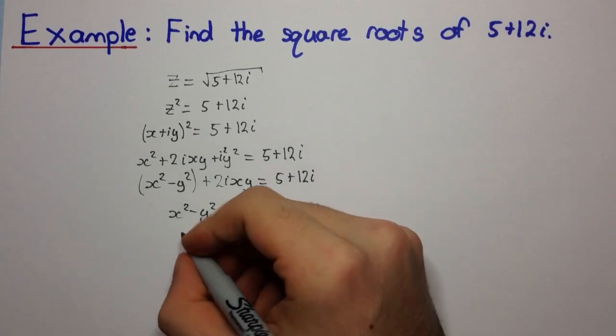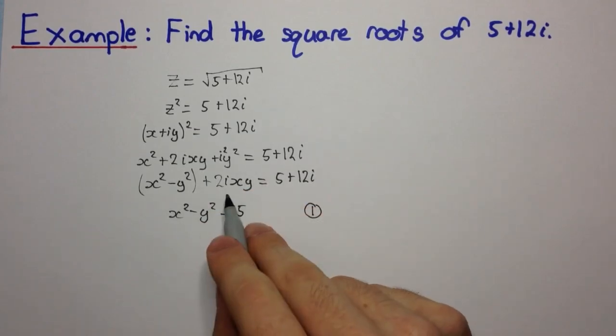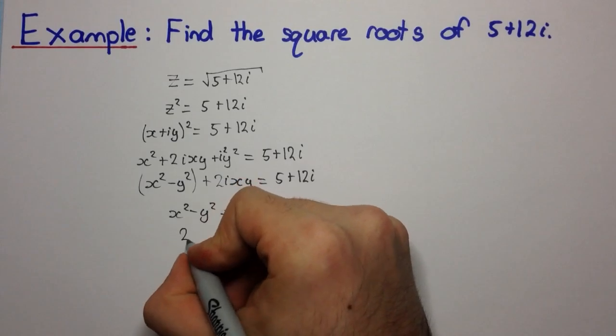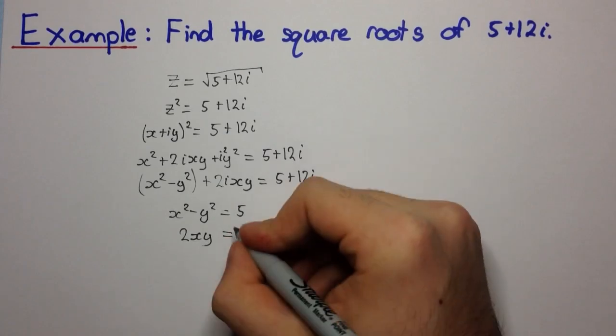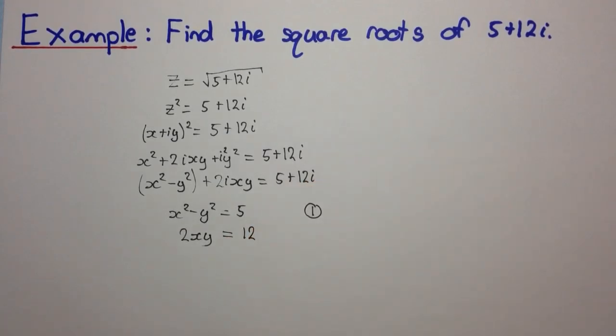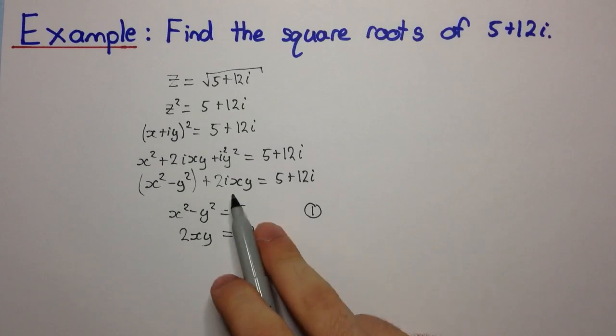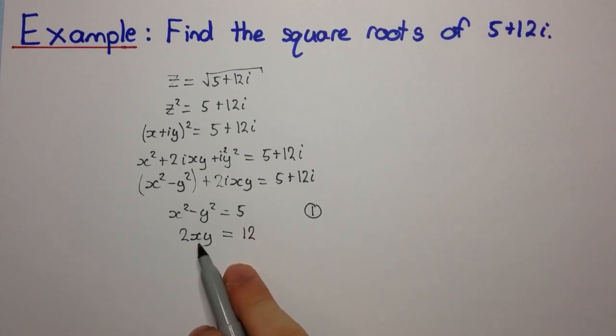And the imaginary part of z squared, which is 2xy, is equal to the imaginary part of 5 plus 12i, which is 12. And remember, once again, this is the imaginary part because it's being multiplied by i. These numbers themselves are real.